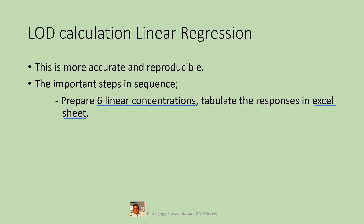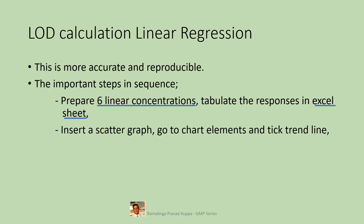In an Excel worksheet, insert a scatter graph. Go to the chart elements and tick the trend line. This is simple to do — go to the Insert tab in Excel and select the scatter graph option. Now you are set for data generation.